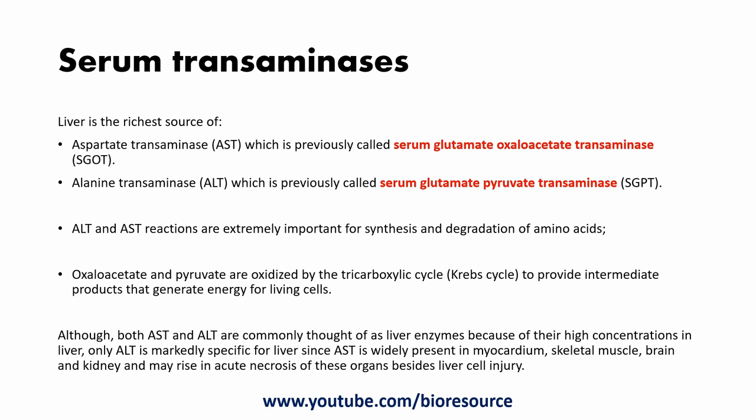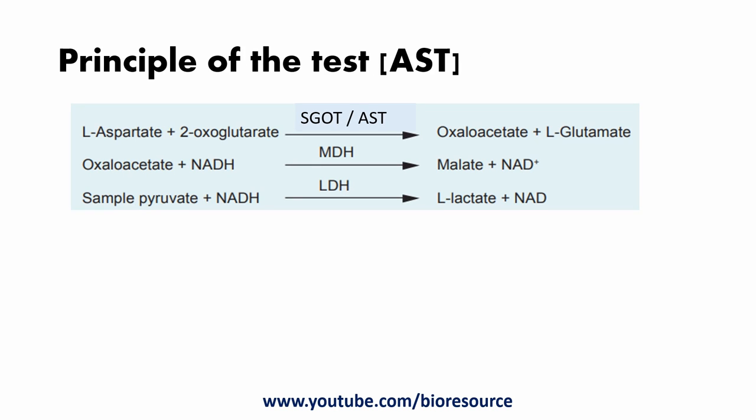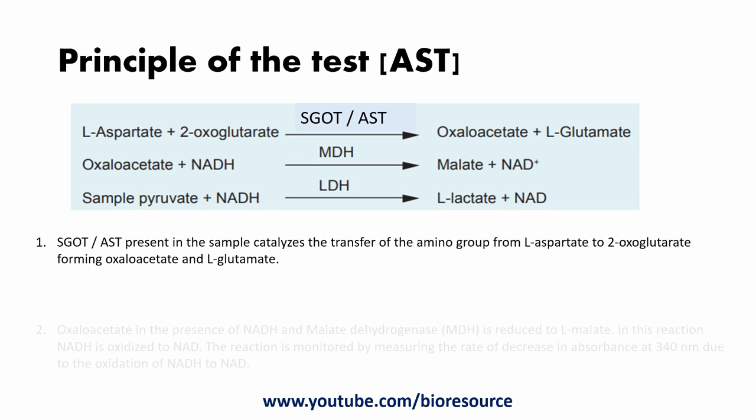Although both AST and ALT are commonly thought of as liver enzymes because of their high concentration in the liver, only ALT is markedly specific for the liver. AST is not very specific for the liver because it is also present in the myocardium, skeletal muscle, brain, and kidney. Therefore, ALT is the specific marker for liver injury. The normal range for AST is 4 to 17 international units per liter, and for ALT it is 3 to 15 international units per liter.